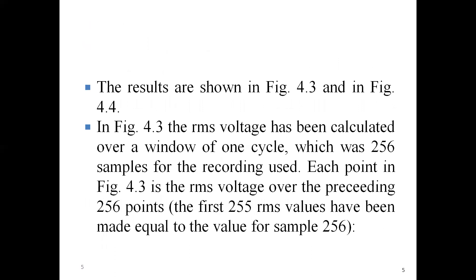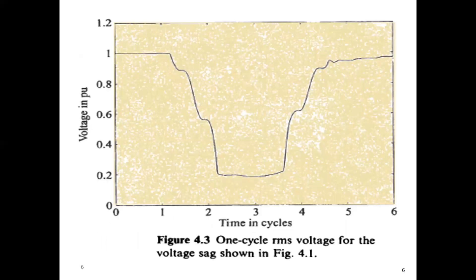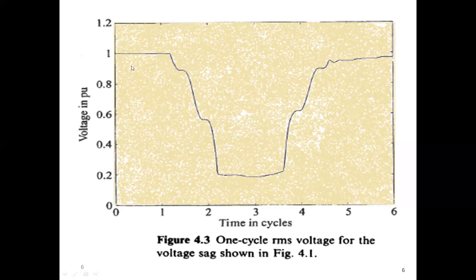Looking at the next figure, we can observe the RMS voltage which has been calculated for a window of one cycle, which has 256 samples for the recording. As the voltage values are recorded through monitors, for one cycle, 256 sample time points are recorded. This is the voltage waveform recorded with the help of 256 samples. Each point in this figure is the RMS voltage for the preceding 256 points, and the first 256 RMS values have been made equal to the value for sample 256.